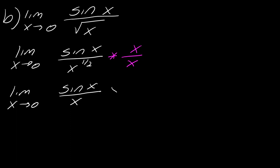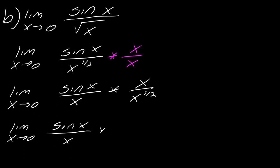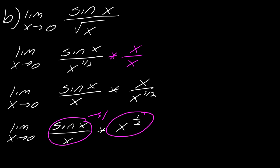So I've got now sine of x over x — I moved one of those x's. Here's the other x that was still on top, and here's that x to the one half that was on bottom. This part I can just simplify, so this becomes the limit as x approaches zero of sine of x over x, times x to the one half. Now we're in business. This part here goes to one, and then the limit of x to the one half as x goes to zero is going to be zero. So the limit of this whole thing is one times zero, which is just zero.